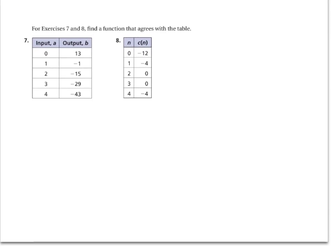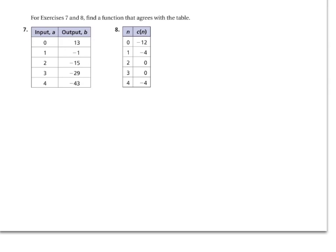Exercises 7 and 8: find a function that agrees with the table. The first one is easy. Find delta—it will be constant. It goes down 14 consistently. You plug in B equals delta times A plus 13. That comes from the output of 13. We covered this earlier. So you plug in negative 14, and B equals negative 14 times A plus 13.